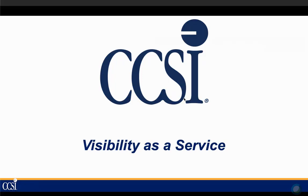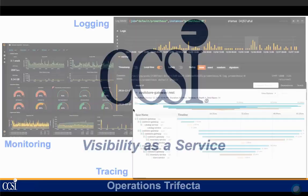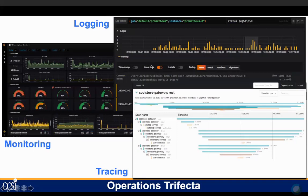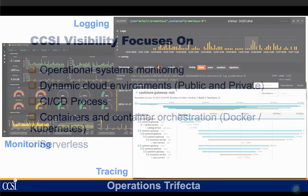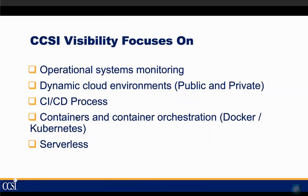CCSI has a visibility-as-a-service offering that covers the three pillars of observability: monitoring, logging, and tracing — with the ability to look inside not just your infrastructure, but any applications you may be developing. CCSI focuses on operational systems monitoring, dynamic cloud environments whether public or private, the full CI/CD process, containers and container orchestration such as Docker, Kubernetes, AKS, Fargate, and the latest in serverless technology like AWS Lambda.